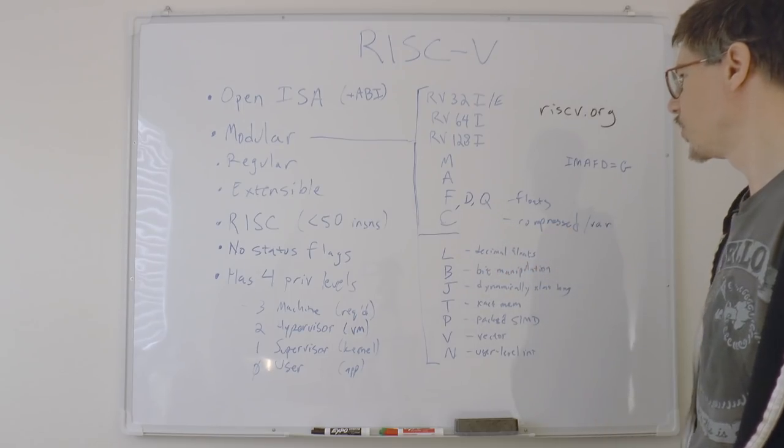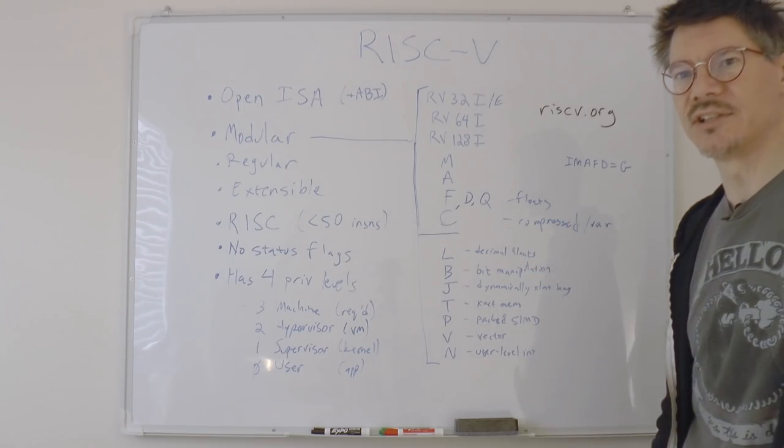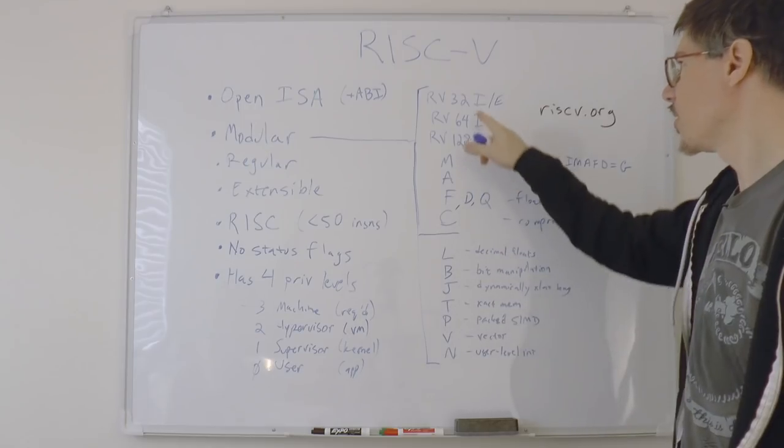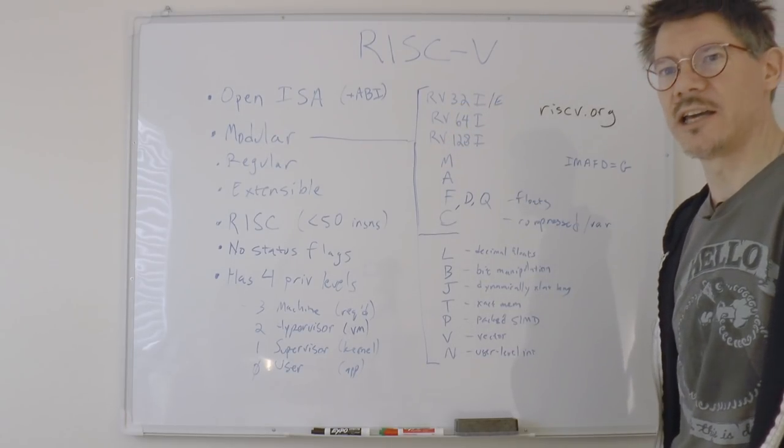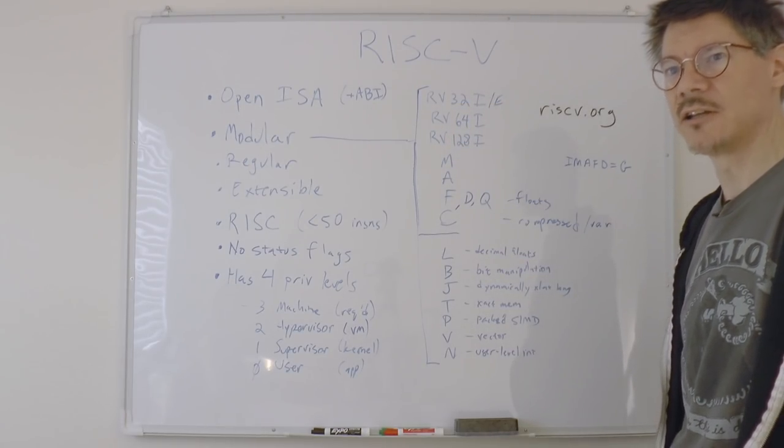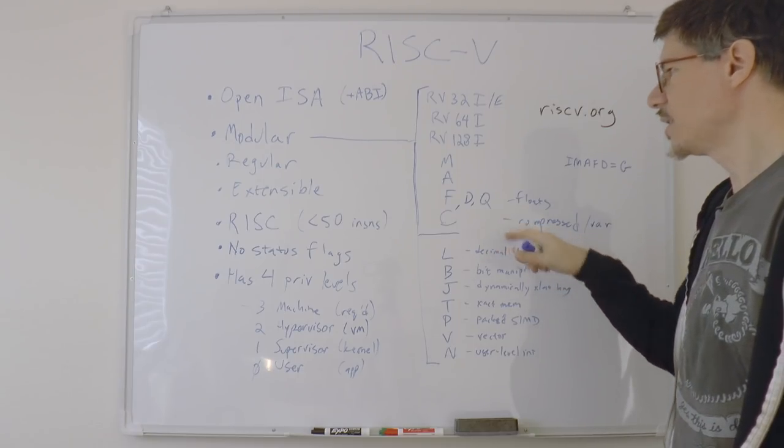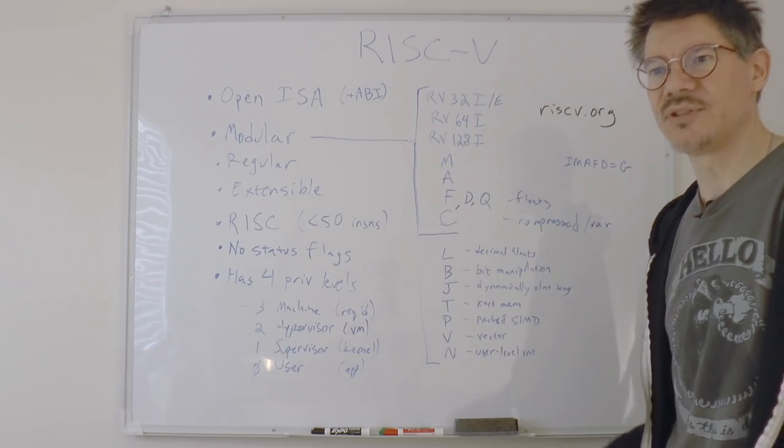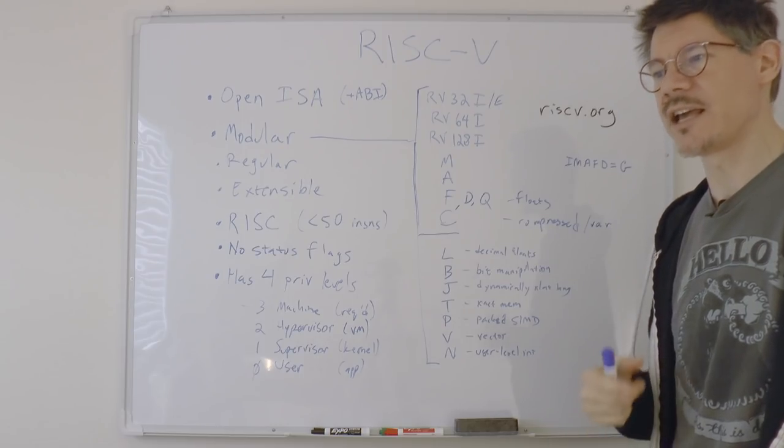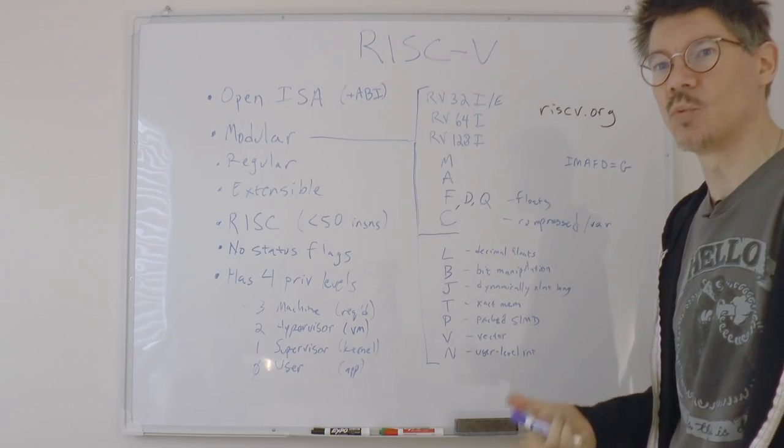And C is for a compressed or variable size instruction set. The instructions in 32i are all 32 bits long, but there is a compressed version where the instructions can be, for example, 16 bits long, and you can have two instructions per word.